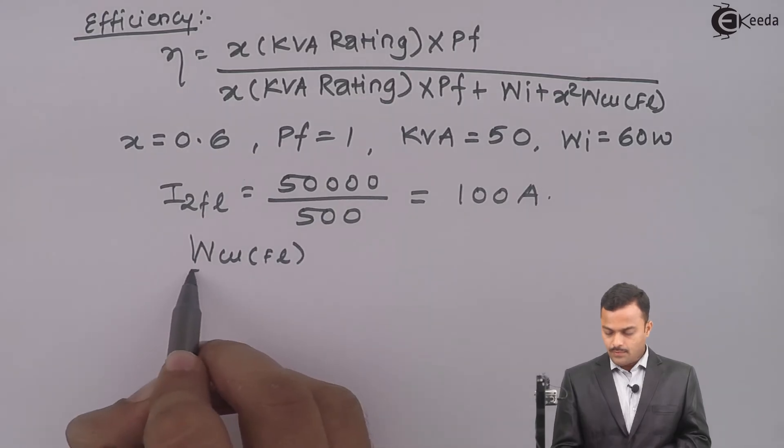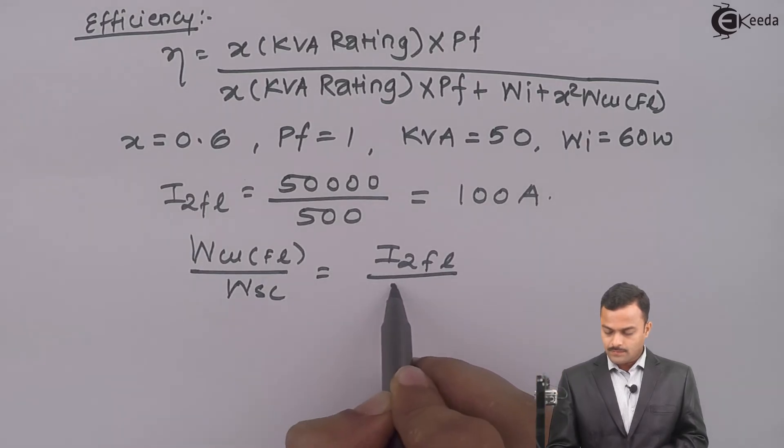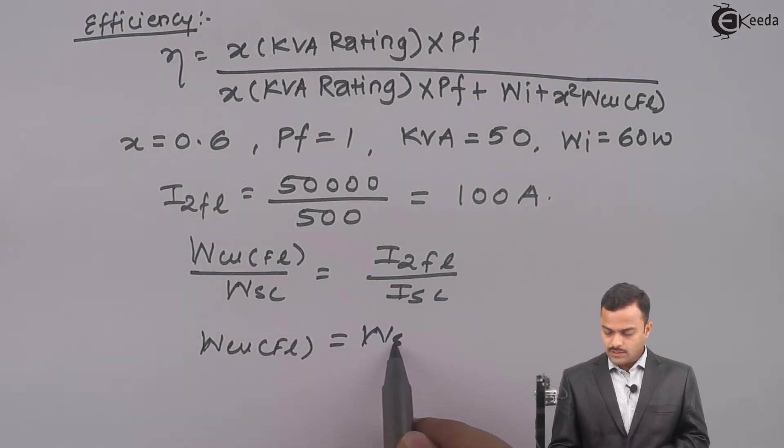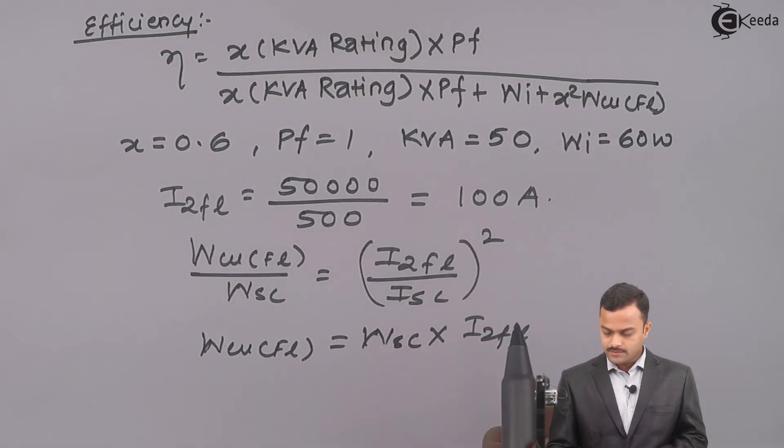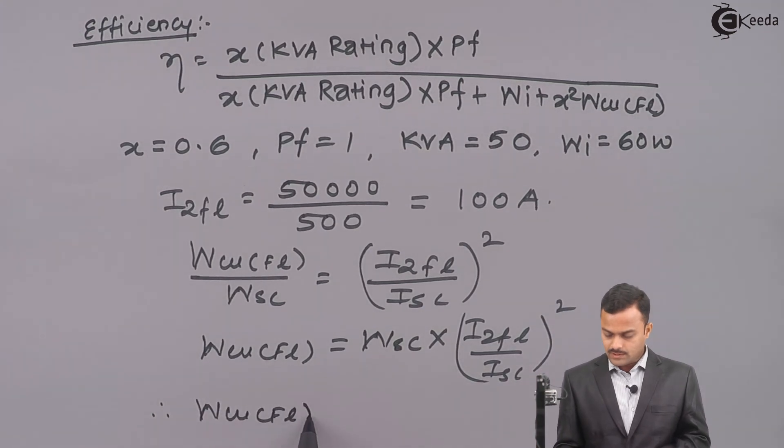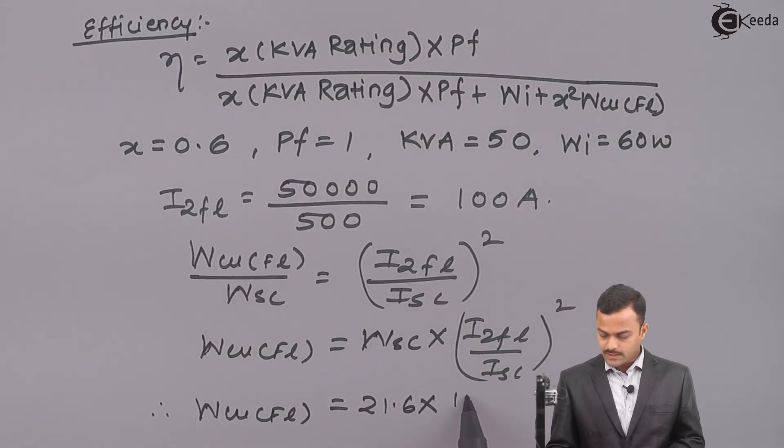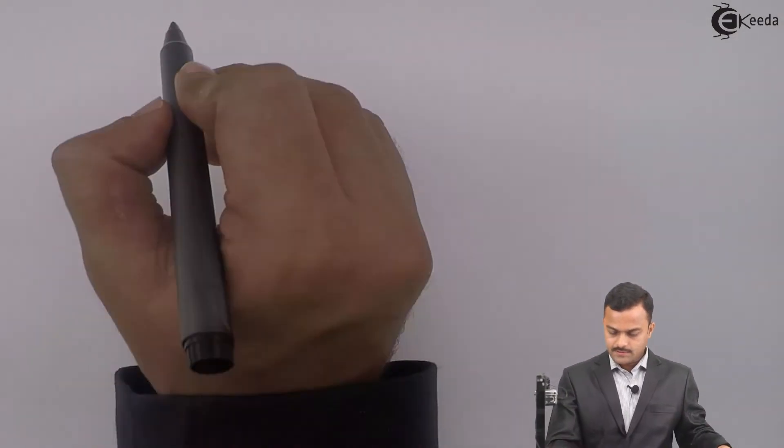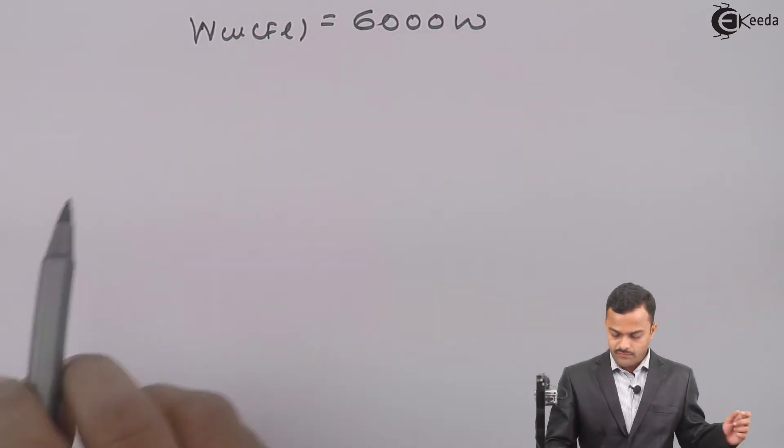WCUFL upon WSC equals I2FL upon ISC. So WCUFL equals WSC multiplied by I2FL upon ISC square. WSC is 21.6, I2FL is 100, ISC is 6. If you solve, WCUFL equals 6000 Watt.